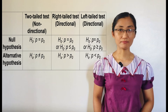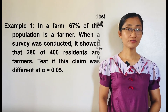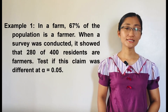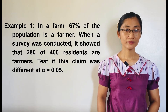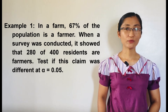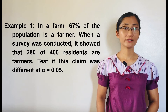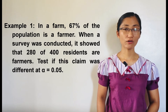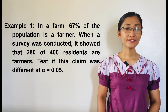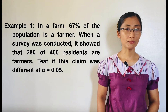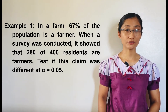Let us now have examples. For example 1, in a farm, 67% of the population is a farmer. When a survey was conducted, it showed that 280 of 400 residents are farmers. Test if this claim was different at alpha equals 0.05.